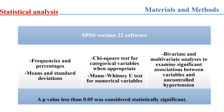We used SPSS version 22 software for data entry and analysis. Qualitative variables were analyzed by frequencies and percentages, and quantitative variables by means and standard deviation. We used the chi-square test for categorical variables and the Mann-Whitney test for numerical variables. Bivariate and multivariate analyses were performed to examine significant associations between variables and uncontrolled hypertension. A p-value less than 0.05 was considered statistically significant.